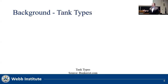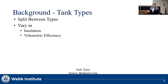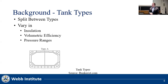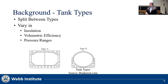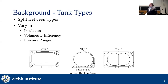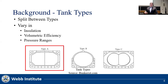The tanks are divided into categories based on insulation, volumetric efficiency, and pressure ranges. Type A, or membrane tanks, are atmospheric tanks with the most volumetric efficiency and good insulation. Type B, or MOS tanks, are spherical atmospheric tanks that optimize surface area for minimal heat ingress. Type C are pressure vessels that utilize high pressures for storage. This thesis will evaluate Type A membrane tanks, as they are the most commercially viable and widely used today.